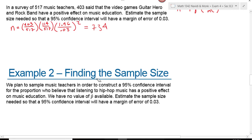I'm going to use the formula N equals 0.5 times 0.5 because I'm using 0.5 for P-hat and 0.5 for Q-hat and the rest of it stays the same.